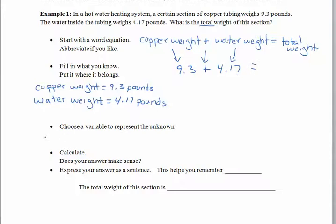Equals. Well, we don't know the total weight, but that's okay. Let's use a variable, maybe t. If you're going to use t, use a capital T so it doesn't start looking like a plus sign. And so we choose a variable to represent the things we don't know. And here we go, capital T. All right, well this one's pretty straightforward. Now we can just calculate. 9.3 plus 4.17. Use your calculator if you need to. But we come up with 13.47 equals t.